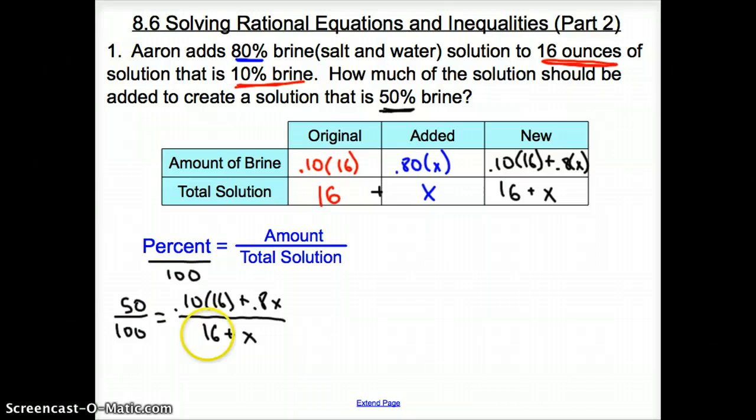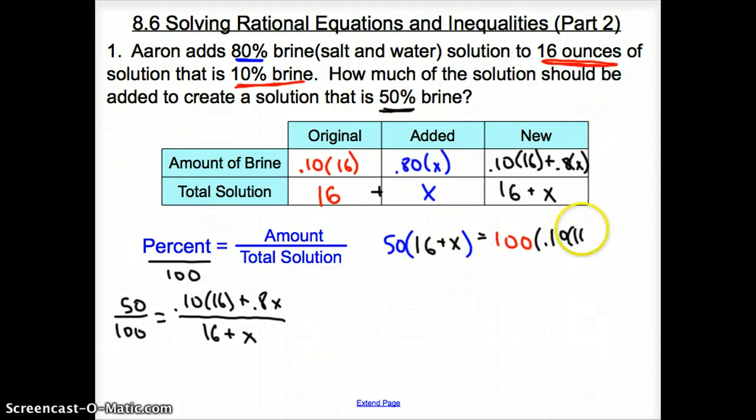Now we have two fractions. So now we just cross multiply. I'm going to take this guy times that. So it's going to be 50 times 16 plus x. I'm going to distribute the 50, so it's going to be 800 plus 50x.